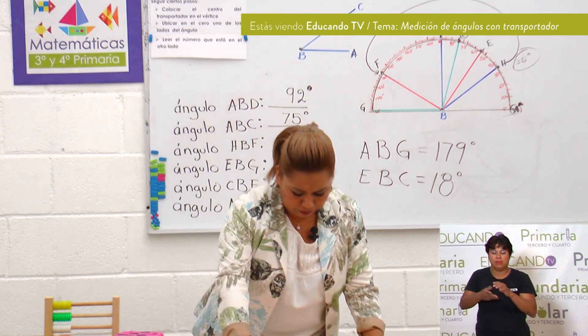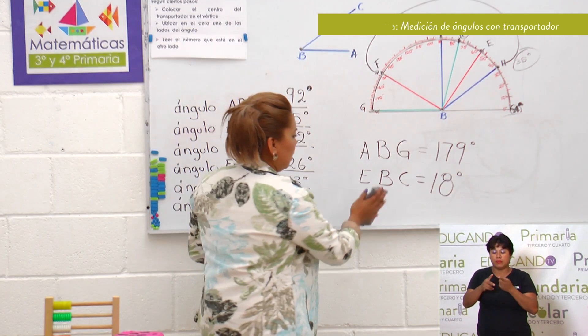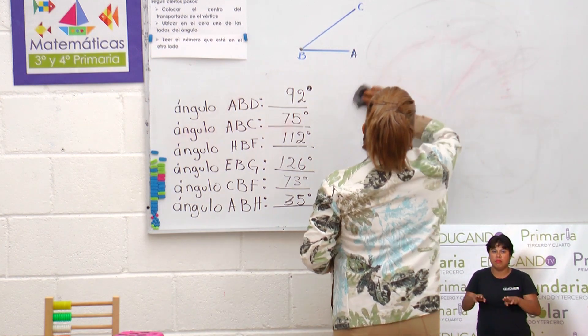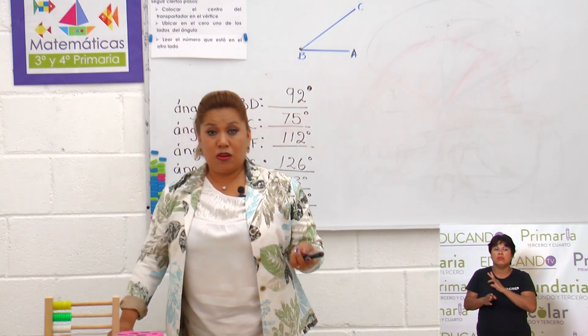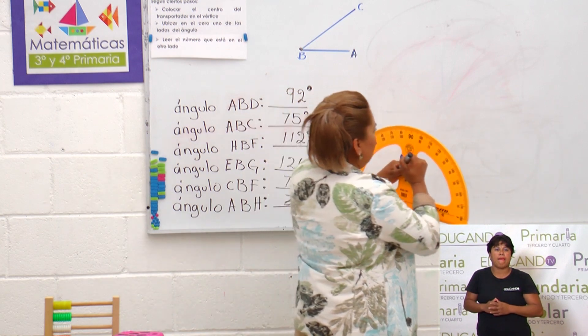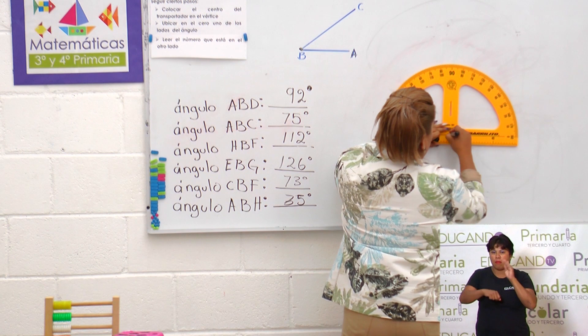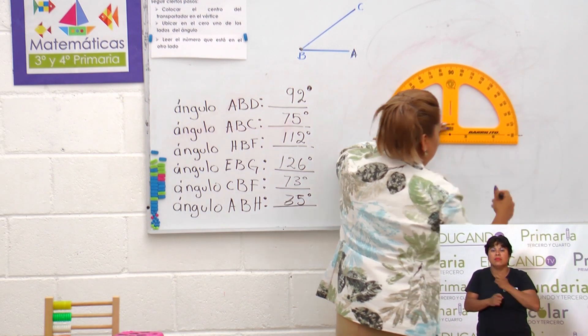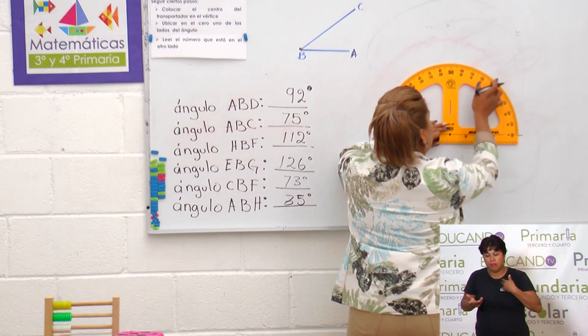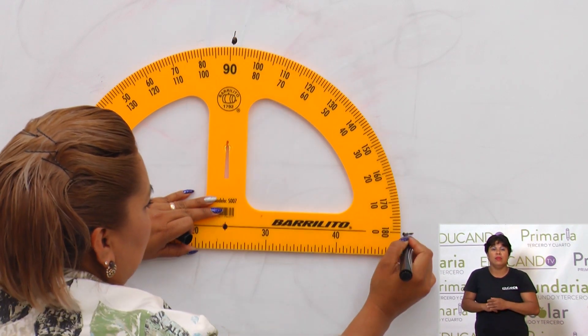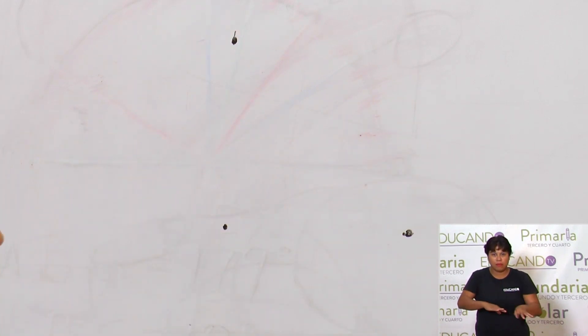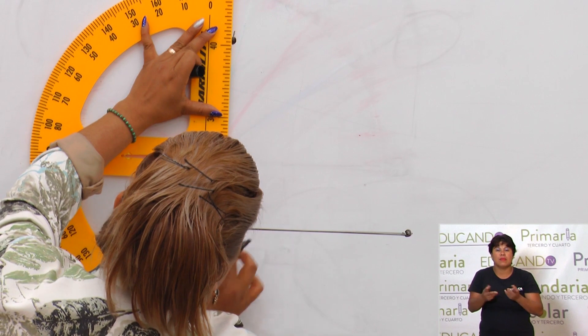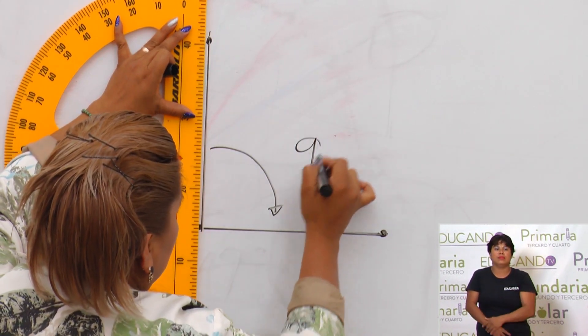Bien. Ahora vamos a realizar otra actividad. En esta actividad vamos a trazar algunos ángulos con algunas medidas que nos están dando. Por ejemplo, a mí me dicen: traza un ángulo que mida 90 grados. ¿Cómo le voy a hacer para medir un ángulo de 90 grados? Pues bien fácil. Mira, ubicamos el transportador. Recuerda poner el puntito donde es el vértice. Ponemos una marca donde empieza o donde está el punto cero. ¿Y de ahí qué hacemos? Si me están pidiendo un ángulo de 90 grados, pues voy a buscar hacia donde esté el 90. Y ahora, ¿qué debo de hacer para marcar ese ángulo? Pues con tu regla o incluso con tu mismo transportador vas a unir los puntos. Y de esa manera estamos creando un ángulo de 90 grados.